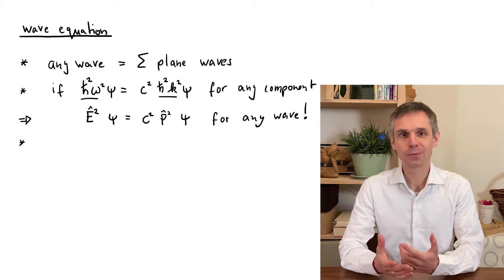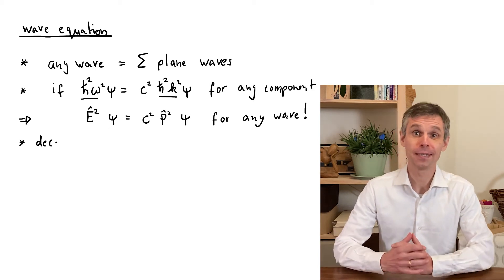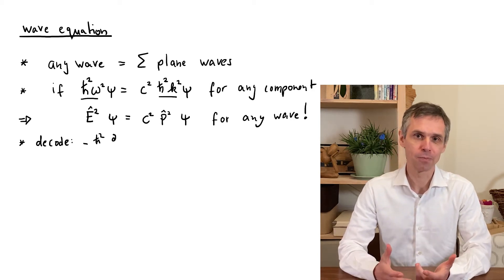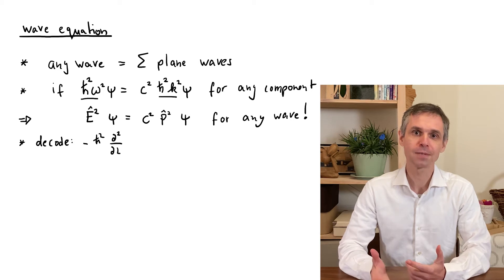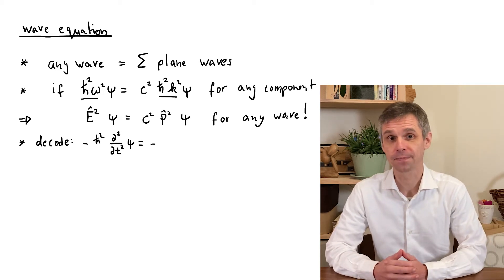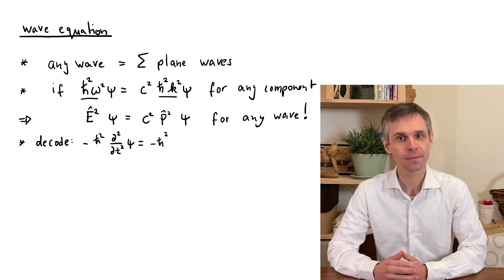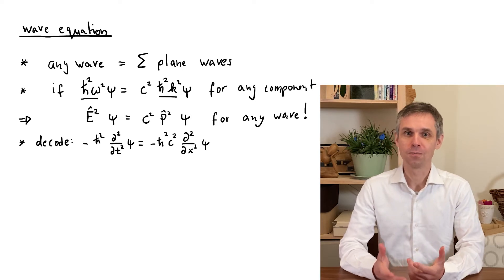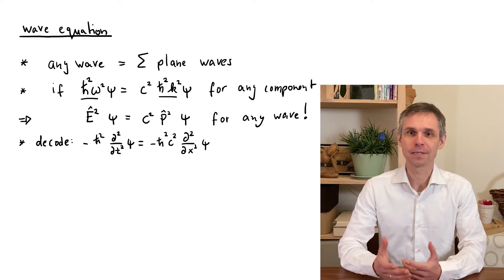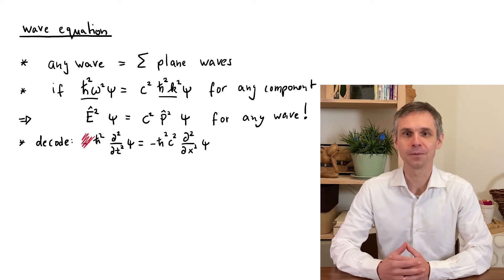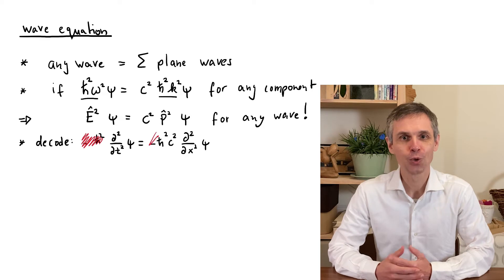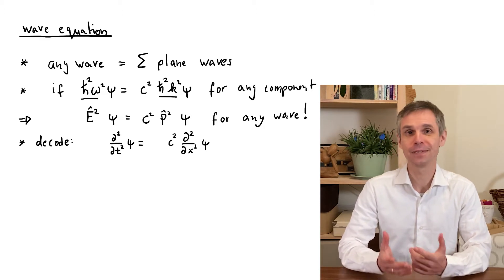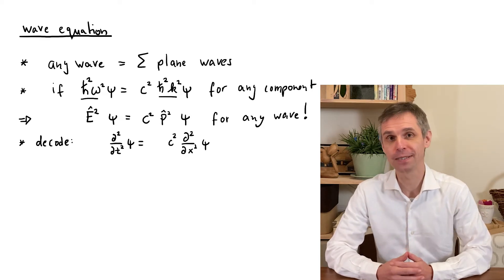Let me decode what we have written down here. For this, we simply replace the energy and momentum operators by their explicit expressions. When we then cancel the common factor of minus h-bar squared on both sides of this equation, we simply recover the wave equation for a light wave in one spatial dimension.